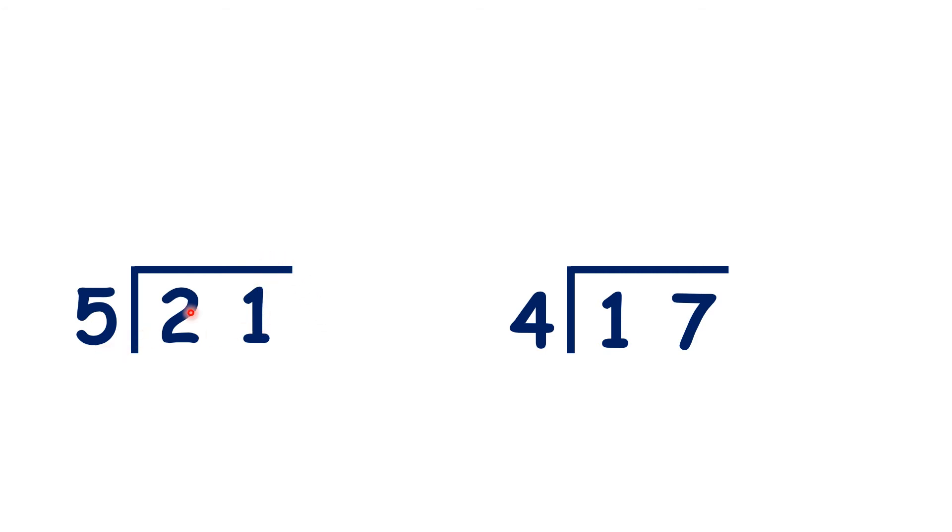21 divided by 5 is 4 remainder 1, so we write the 4, point 0 after the dividend, then 1 remainder. Now we copy up our decimal point, and 10 divided by 5 is 2, so we have our answer.